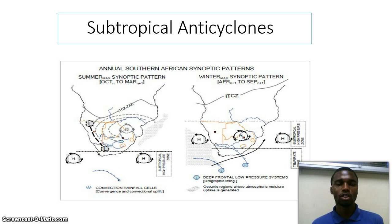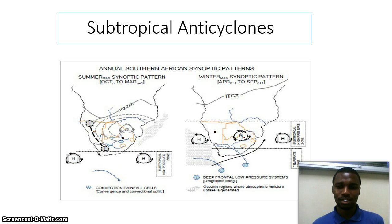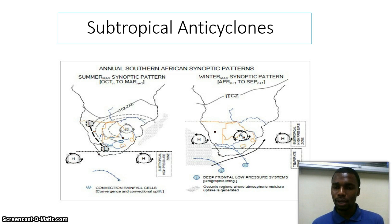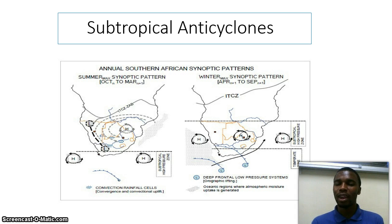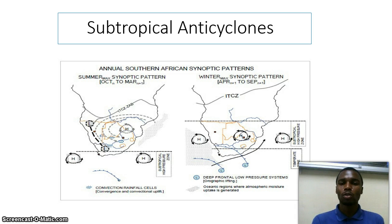Another concept is the subtropical anticyclones. When we look at the image on my left, which is summer, we tend to see that the ITCZ — the Inter-Tropical Convergence Zone — tends to migrate northward. That is why in winter we expect to see cold fronts passing over the interior of Southern Africa. But in summer it is the opposite, because the ITCZ migrates south, and cold fronts do not pass over the interior.